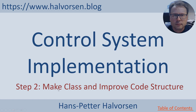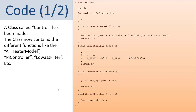Now let's take the next step: make a class and improve the code structure. I have created a class called control with a constructor, and I have put the different functions into the class — the air heater model, the PI controller, the low pass filter, and the serial plotter. I have also improved the code structure by removing most global variables, using local variables inside each function, and using return values. The air heater model returns the process value, the PI controller returns the controller value, and the low pass filter returns the measured value.